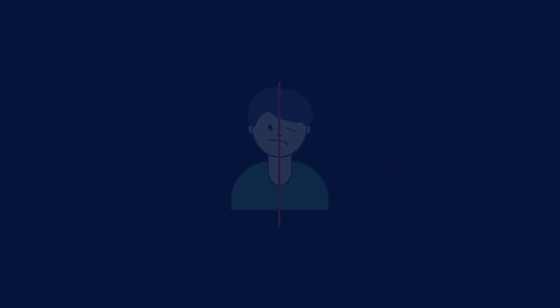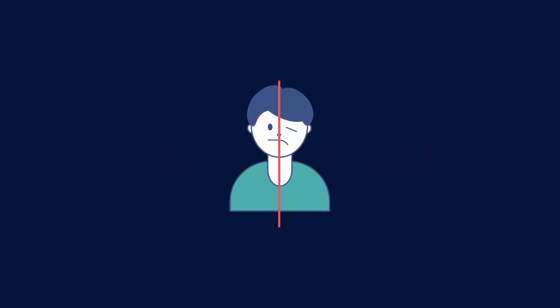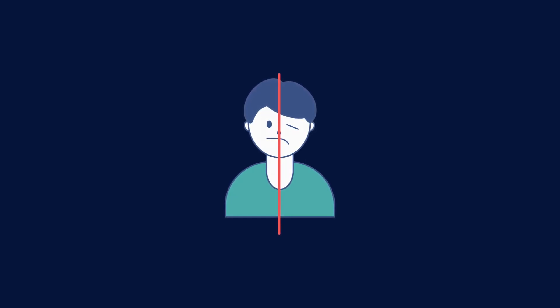The Cincinnati Stroke Scale assesses three key indicators associated with stroke: facial droop, arm weakness, and speech impairment. These symptoms indicate possible neurological damage and are commonly observed in stroke patients.